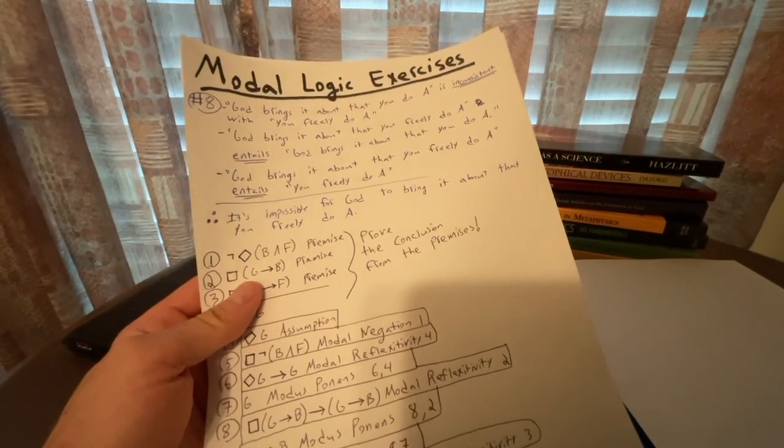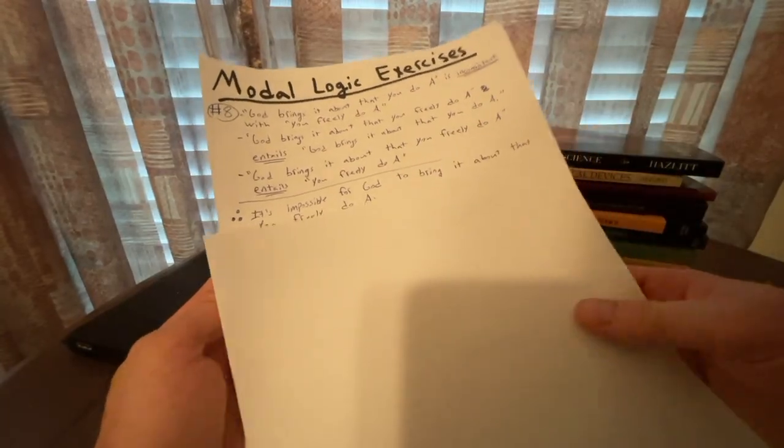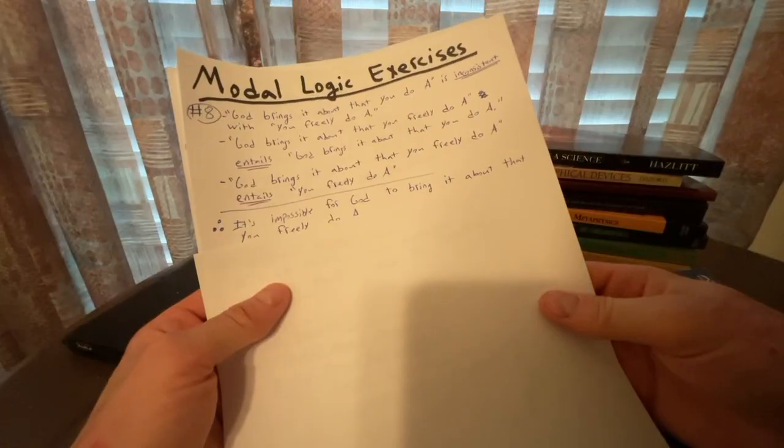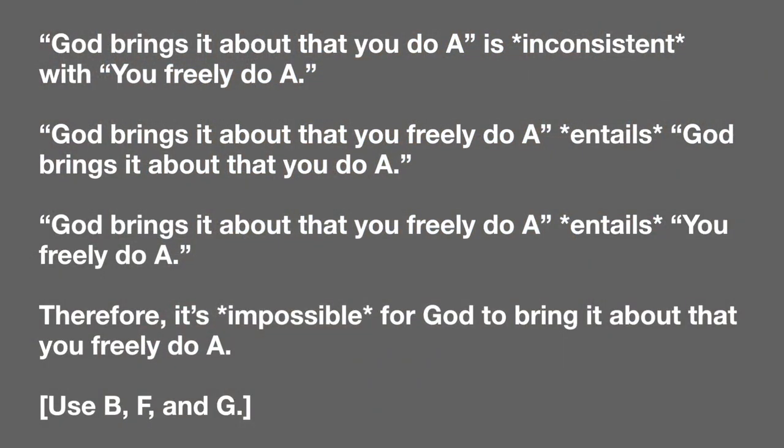I wanted to change things up a little bit and work on problem number eight. So we're going to do that. This is again from the textbook. The argument is: God brings it about that you do A is inconsistent with you freely do A. God brings it about that you freely do A entails God brings it about that you do A. God brings it about that you freely do A entails you freely do A. Conclusion: Therefore, it's impossible for God to bring it about that you freely do A.